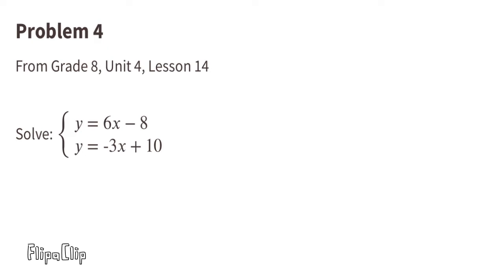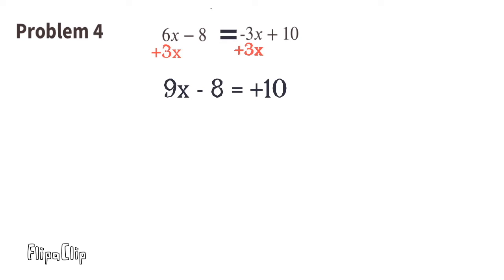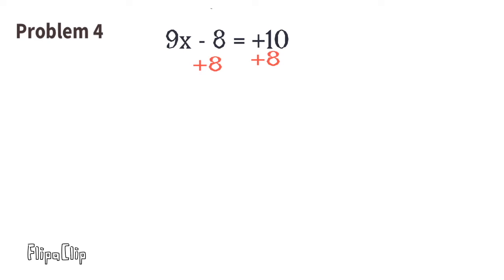Problem number 4. From 8th grade Unit 4 Lesson 14. Solve Y equals 6X minus 8 and Y equals negative 3X plus 10. This tells us that 6X minus 8 equals negative 3X plus 10. Let's start solving by adding 3X to both sides of the equal sign. Now we have 9X minus 8 equals 10. Next, let's add 8 to both sides of the equal sign. Now we have 9X equals 18. Divide both sides by 9.